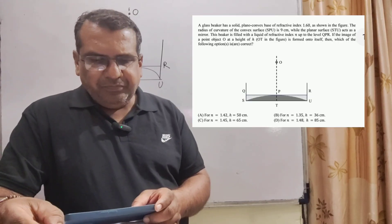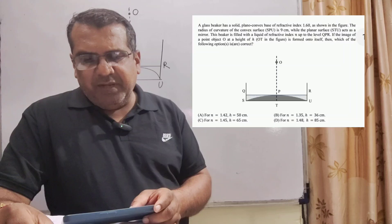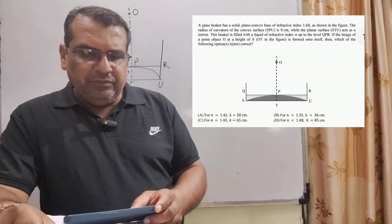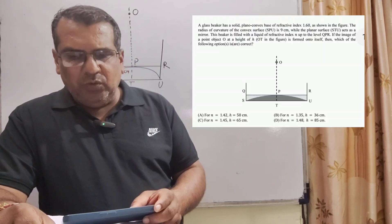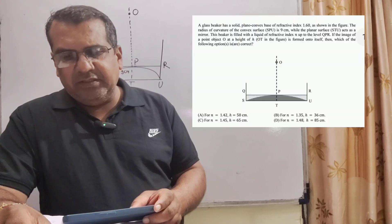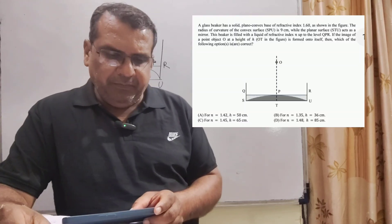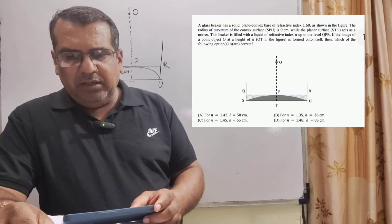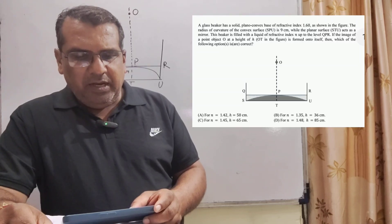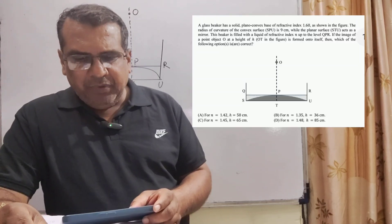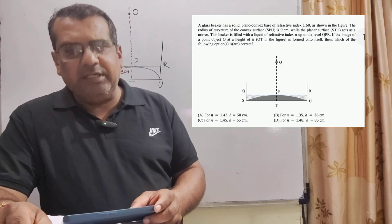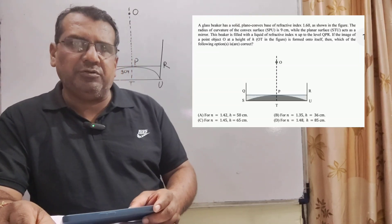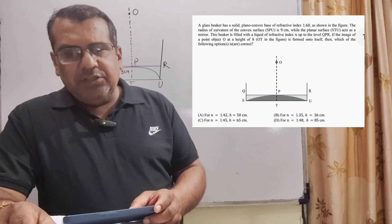Now, here is the question. A glass beaker has a solid plano-convex base of refractive index 1.6 as shown in the figure. The radius of curvature of the convex surface SPU is 9 cm while the planar surface STU acts as a mirror. This question is from JEE Advanced 2024.